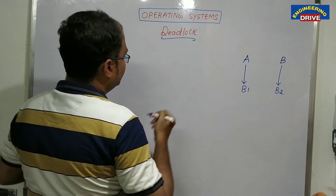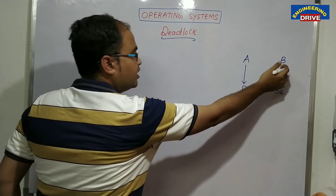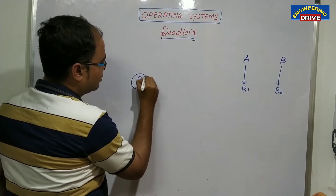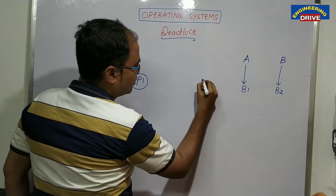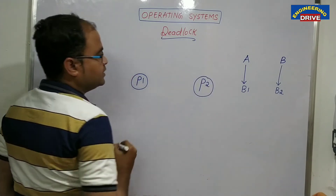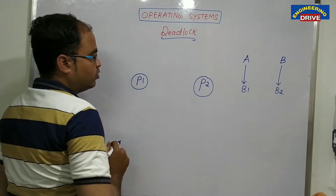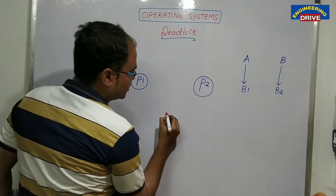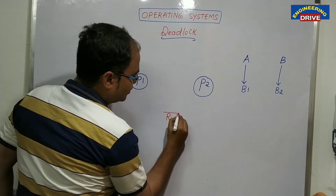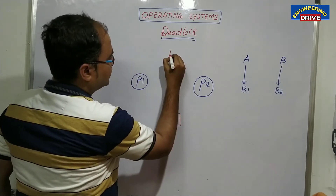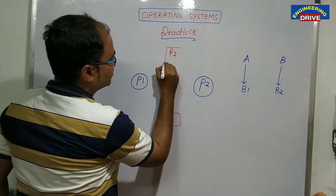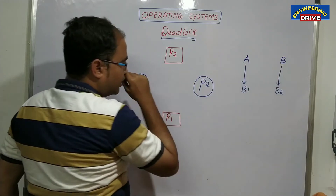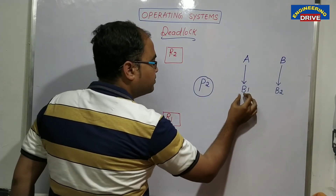I am having two processes — P1 and P2. Then I will take two resources — R1 and R2. P1 and P2 compare with the two students A and B. Resources R1 and R2 compare with books B1 and B2. This is our operating systems example I am taking now, so that it will be clear to you.